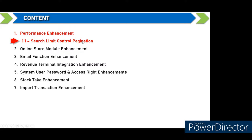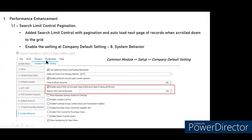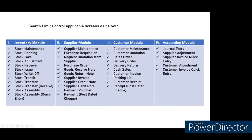The first enhancement for version 2021.2 is performance enhancement: Search Limit Control Pagination. This function must be enabled manually — it is not enabled by default. You enable it in the Common Module under Setup > Company Default Setting. This feature auto-loads the next page of records when you scroll down the grid.